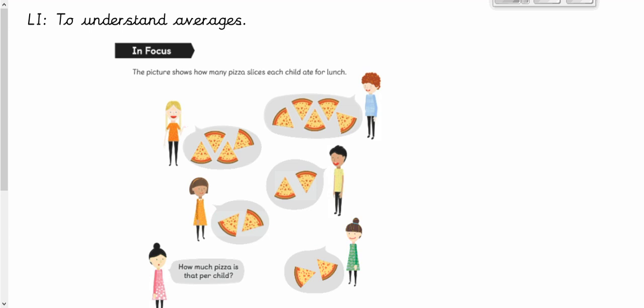So our learning intention today is to understand averages. Okay. So the picture shows how many pizza slices each child ate for lunch. So this boy ate five slices, this girl ate four slices, and these all ate two slices. So how much pizza is that per child? We're going to explore how we can use averages to do that.